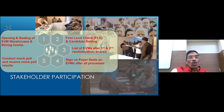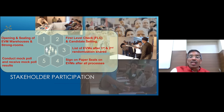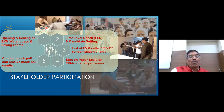Paper seals are signed on EVMs by all political party representatives after every process — these are tamper-evident paper seals. If the machine is opened after sealing, it will show it has been tampered. Mock poll results are also verified with all stakeholders. First level check confirms whether machines are operational: machines are opened, cleaned, given full functionality and behavioral checks, and defective machines are set aside. Serviceable items like broken plastic switches are replaced.